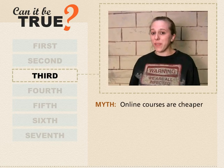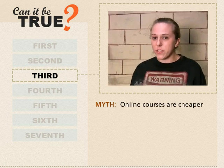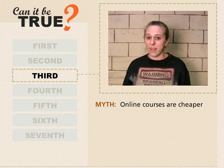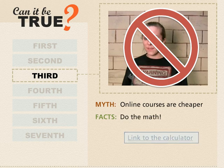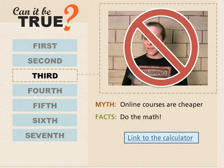Myth 3: Online courses are cheaper than taking classes on campus — unless you're taking a class online, you're basically wasting your time and money. In reality, tuition fees for online courses are typically the same as your traditional on-campus classes. But there are some hidden costs of taking a class on campus that you may not have considered. If the cost savings calculator estimates that you will save money, and if you successfully complete the course, our job is to make sure that you can make that happen.